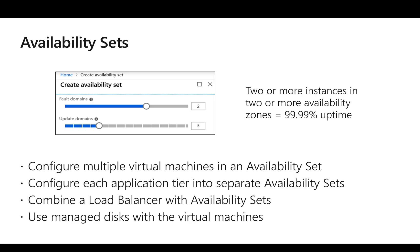When deploying a multi-tier application, the general recommendation is that if a service tier — say a web server layer — has similar functionality, we should create a separate availability set for that web server tier. Similarly, we should create different availability sets for the application tier and for the database tier. The reason is that availability sets ensure at least 50 percent of the VMs will be up during any given instance.